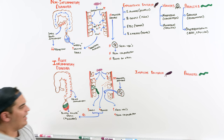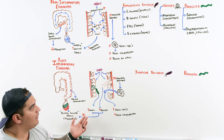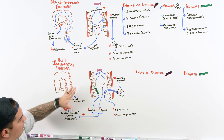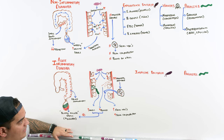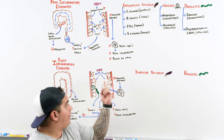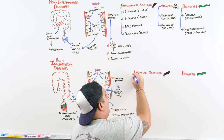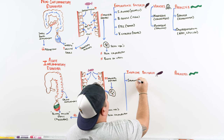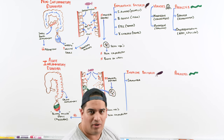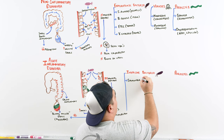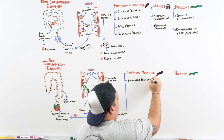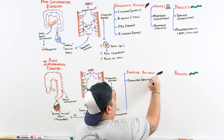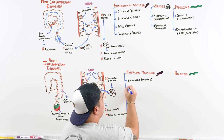What pathogens cause direct mucosal damage? First is Salmonella — think undercooked poultry or eggs, primarily foodborne. Next is Shigella — scary because it can be related to travel and foodborne transmission, often poultry, and it can both release toxins and cause direct damage.